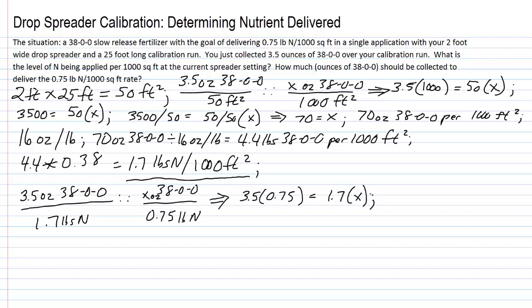We have roughly 2.6 equals 1.7 times X. We divide both sides now by 1.7 in order to solve for X. 2.6 divided by 1.7, and 1.7 divided by 1.7 times X. Our answer is 2.6 divided by 1.7, that's about 1.5 ounces of 38-0-0.